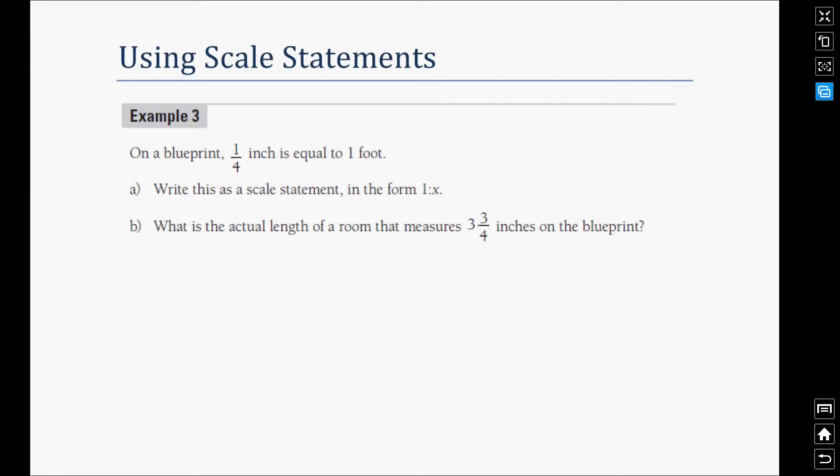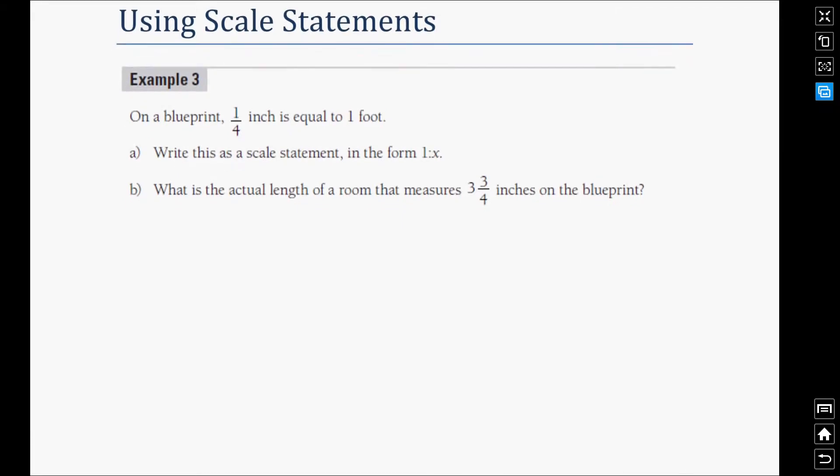On a blueprint, one quarter inch is equal to one foot. This is usually a common occurrence, although they won't usually be read as one quarter inch equals one foot. They'll probably have something like one centimeter equals one foot or one inch equals one foot. This is why the first example, the first thing we want to do is write the statement in the form 1 to some factor X, and then part B is what is the actual length of the room that measures 3 and 3/4 inches on the blueprint.